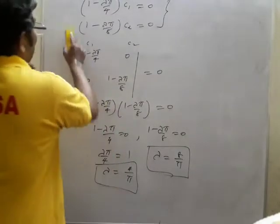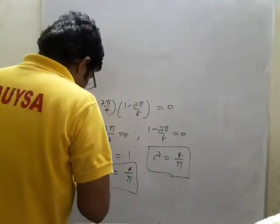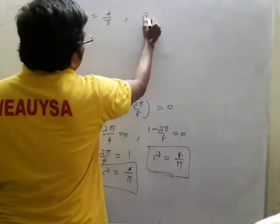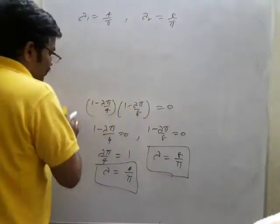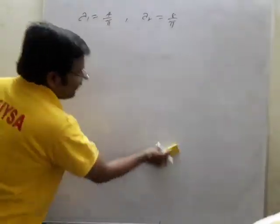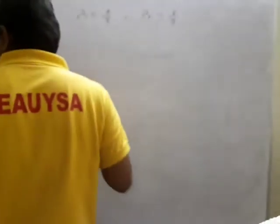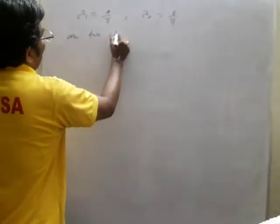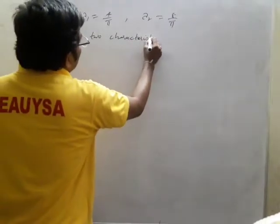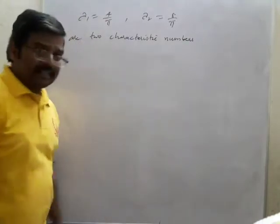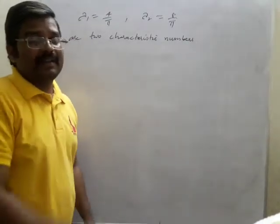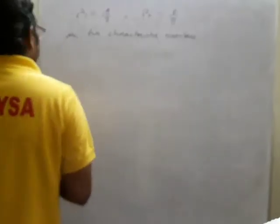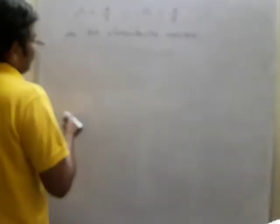We have found two values: λ = 4/π and λ = 8/π. Let us consider these as λ₁ and λ₂. So λ₁ = 4/π and λ₂ = 8/π — these are the two values from these equations. These are the two characteristic numbers. Now we need to find the eigenfunctions for the corresponding characteristic numbers λ₁ and λ₂ by substituting these values into the concerned equations.